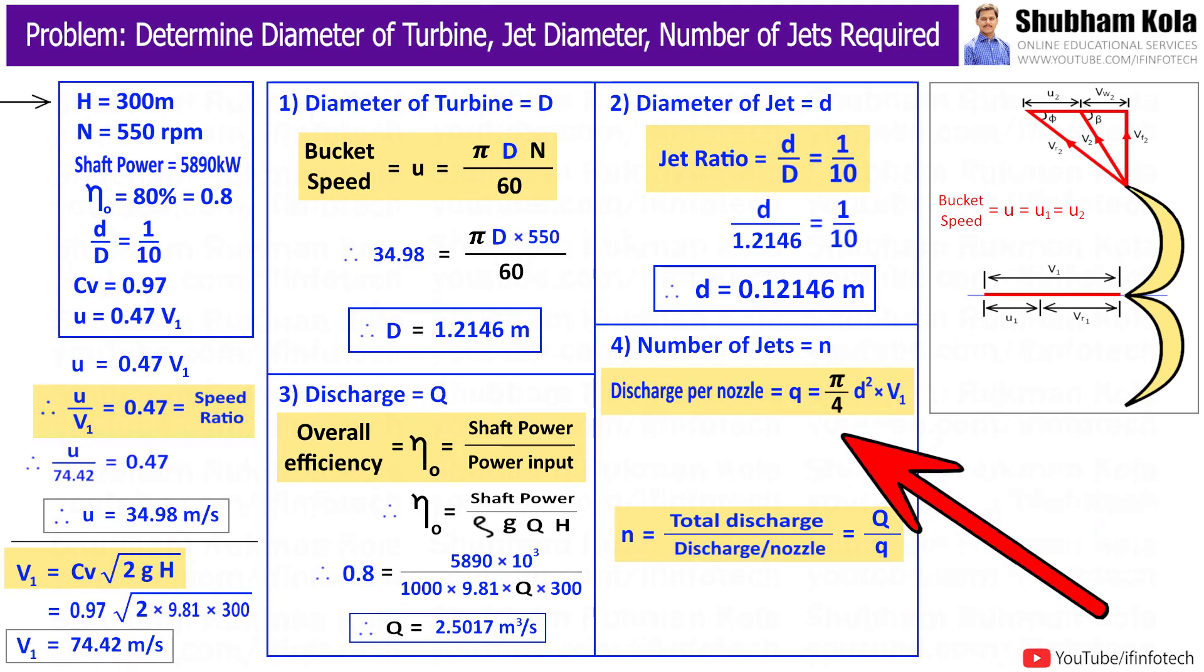Small q equals area of jet, small a, multiplied by velocity of jet V1. Area of jet is π by 4 d squared, where small d is jet diameter, which we have calculated earlier.